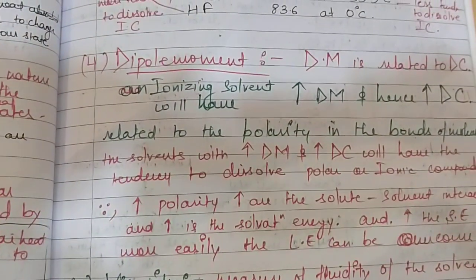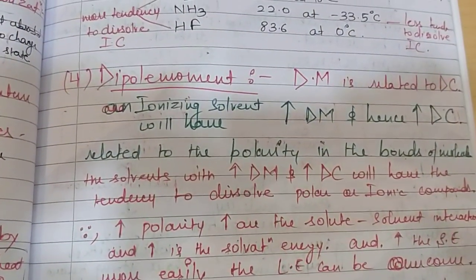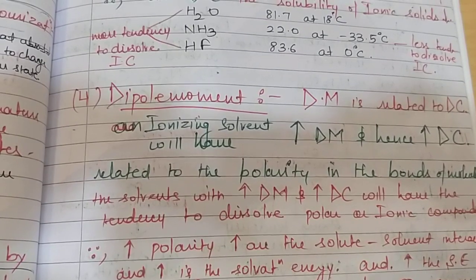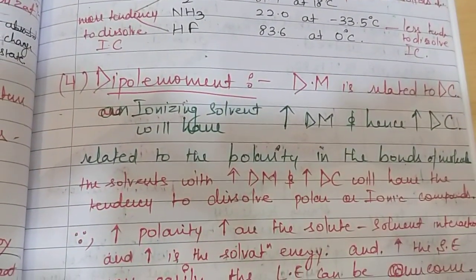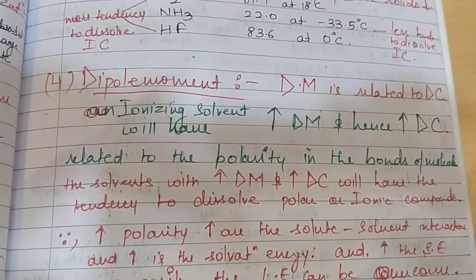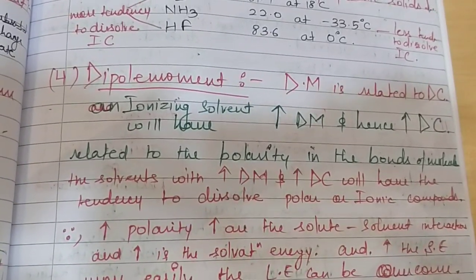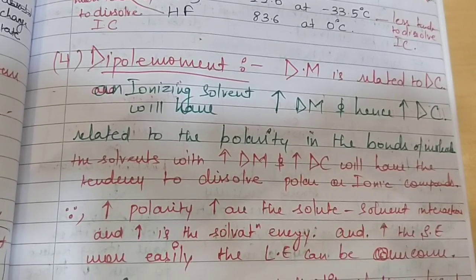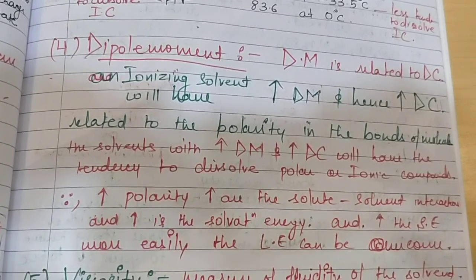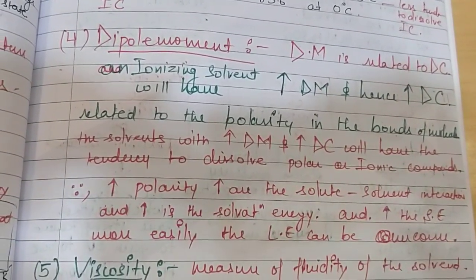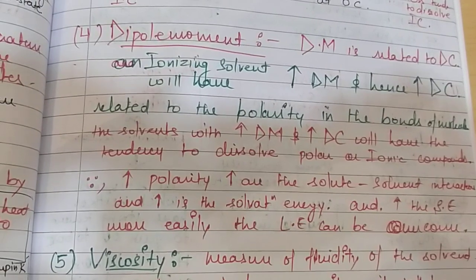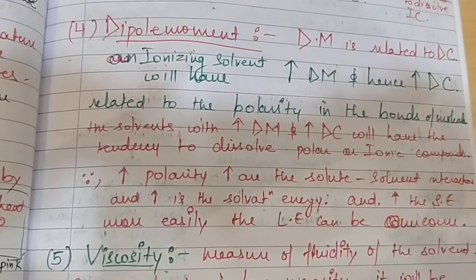The next physical property is dipole moment. Dipole moment is related to dielectric constant — an ionizing solvent will have a greater dipole moment, and hence a high dielectric constant related to polarity in the molecule's bonds. A solvent with high dipole moment and high dielectric constant will tend to dissolve polar or ionic compounds, because greater polarity leads to greater solute-solvent interactions and greater solvation energy, which helps overcome lattice energy.